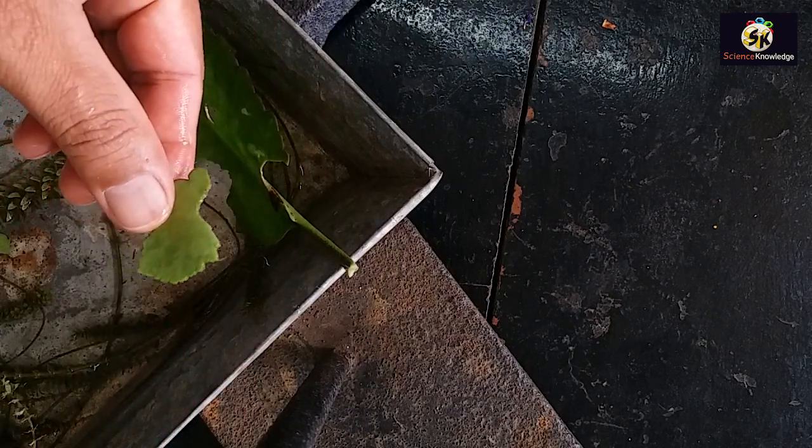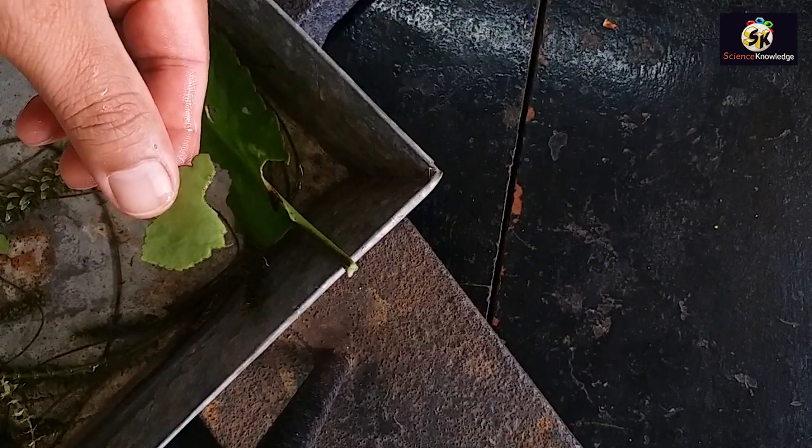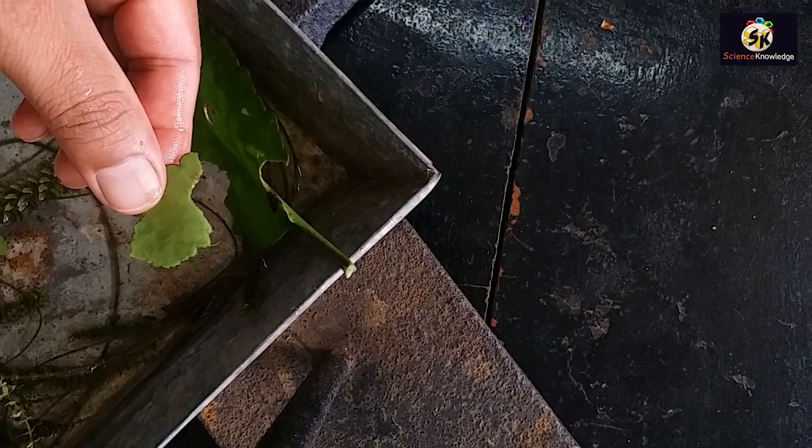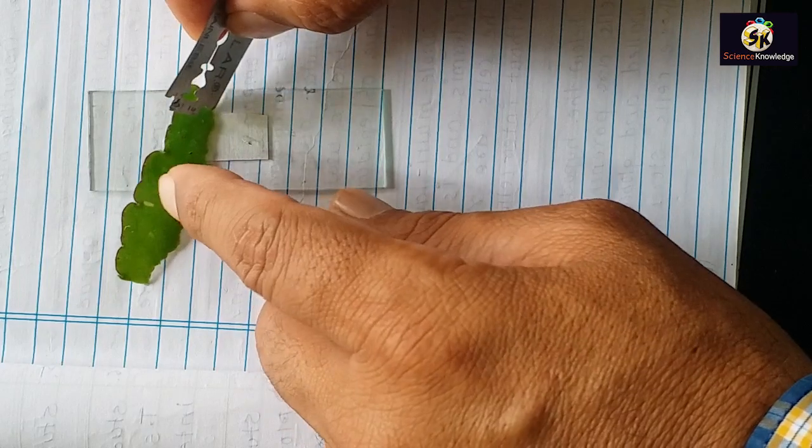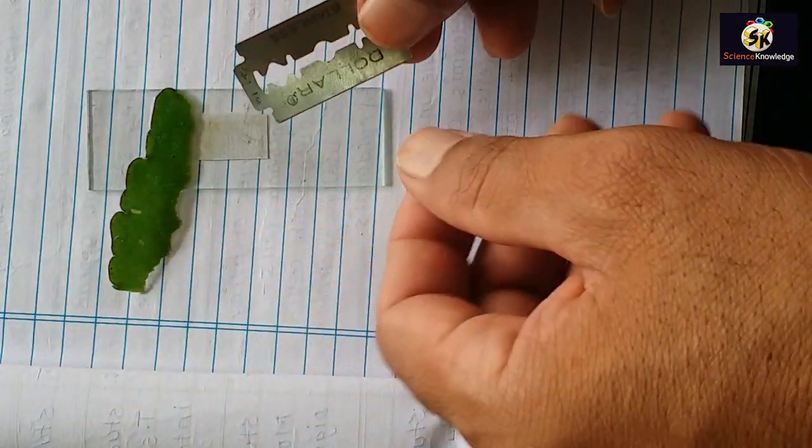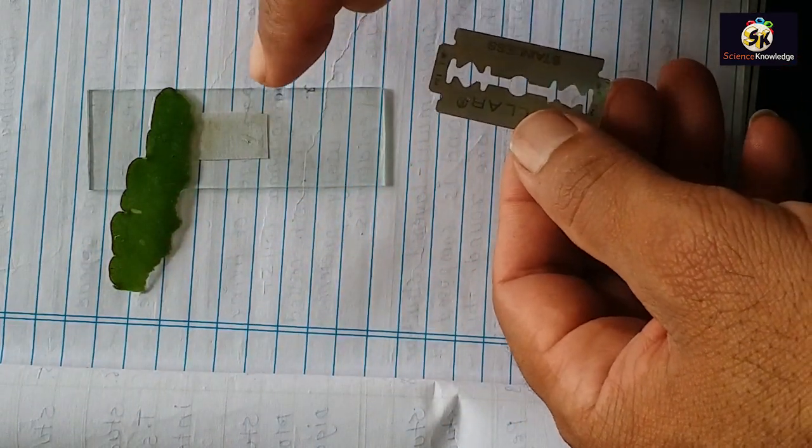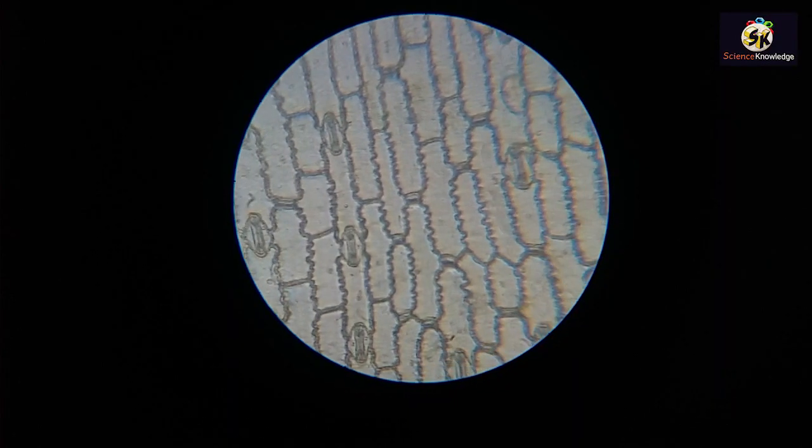The peeling will be mounted in a drop of glycerin, and then we have to put a coverslip on this slide. Then observe it under microscope at low power.